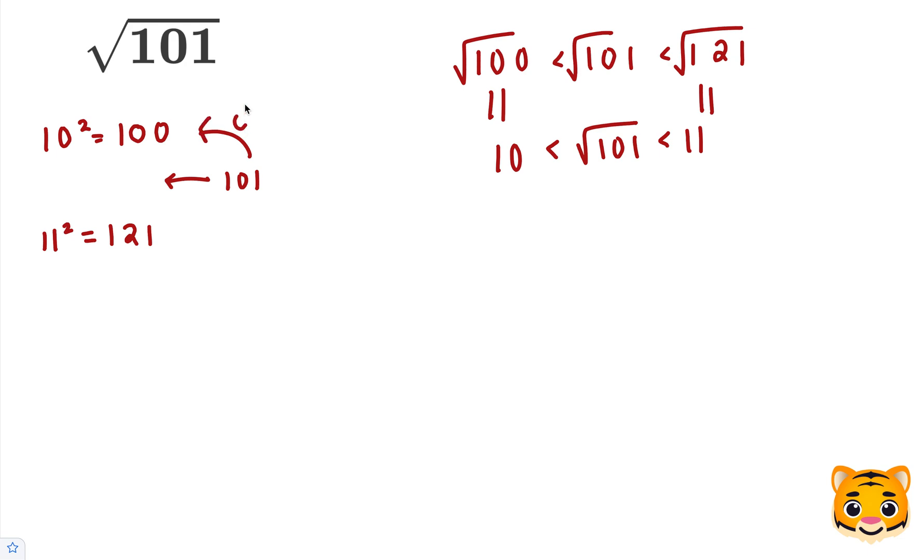However, 101 is a lot closer to 100 than it is to 121, so the square root of 101 will be closer to 10. Let's find a tenth place decimal close to 10 that we can square to give us about 101.